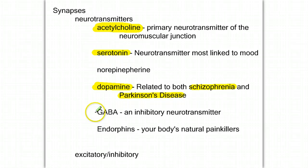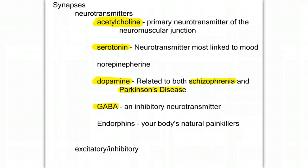GABA, which is an abbreviation for a very long word, is interesting in that it's an inhibitory neurotransmitter. And then we have our endorphins, our body's natural painkillers that are released at times of stress. Most of these neurotransmitters are excitatory, but GABA, for example, is inhibitory.